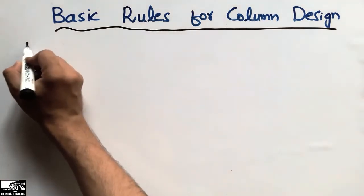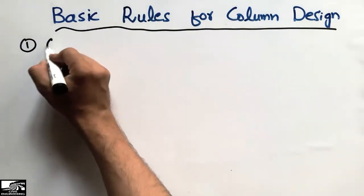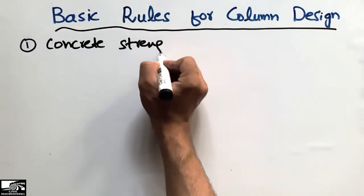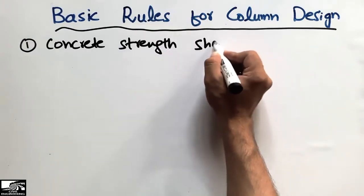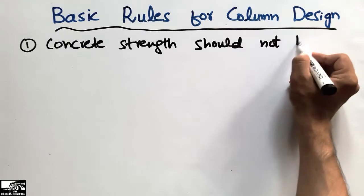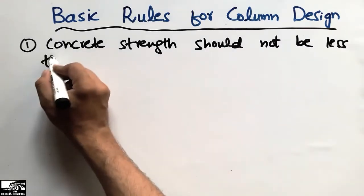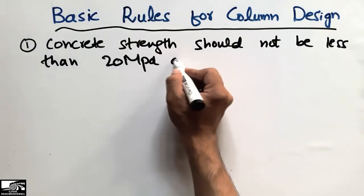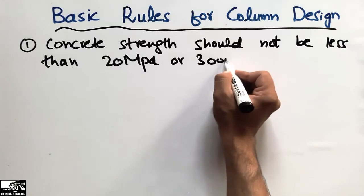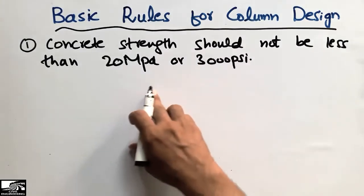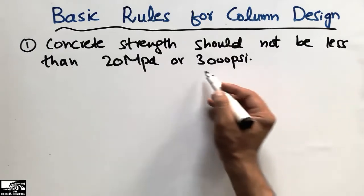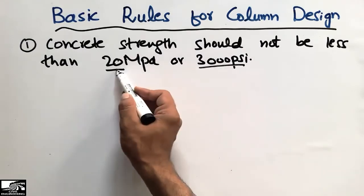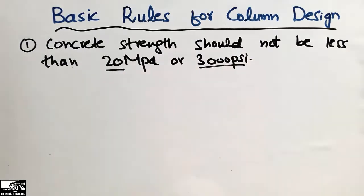The first rule for the design of the column is that the concrete strength used in the column should not be less than 20 MPa, or we can say 3,000 psi. The concrete used in the column must show a strength of 3,000 psi or greater, which equals 20 megapascals or greater than 20 megapascals.